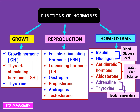Let us now categorize the hormones studied into three categories based on their functions: growth, reproduction, and homeostasis. For growth: growth hormone stimulates the growth of bones and muscles. Thyroid stimulating hormone (TSH) from the pituitary gland stimulates the thyroid gland to secrete thyroxine, and thyroxine stimulates the physical and mental development of a child. Follicle stimulating hormone (FSH) stimulates the development of follicles containing the ovum in the ovary.